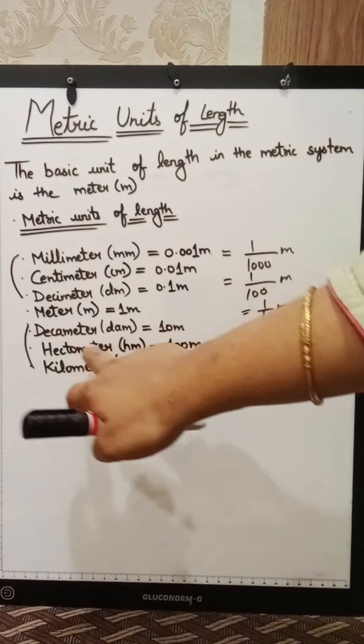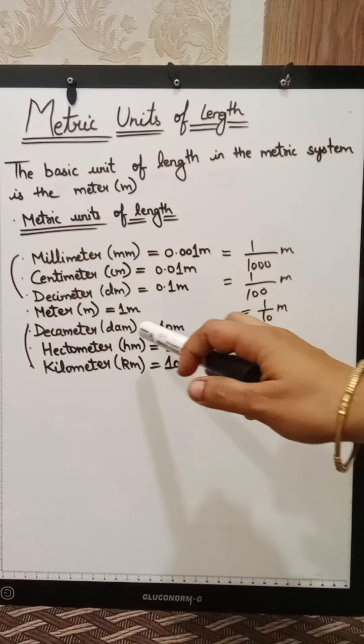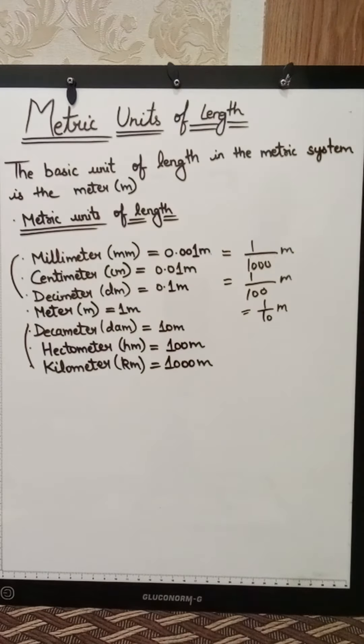Here we have hectometer, HM. 1 hectometer is equal to 100 meter. If we get 100 meter, it will become hectometer. And if we get 10 meter, it will become 1 decameter. Then, 1 kilometer is equal to 1000 meter. If 1000 meter combine, it will come to a kilometer.